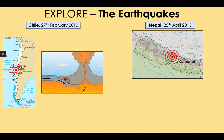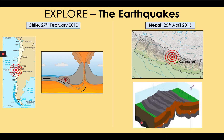By contrast, in Nepal there is a collision plate boundary. Two continental plates are crashing into each other, which forms the Himalayan mountains. The friction between these plates means that movement doesn't happen in a regular process — it happens suddenly in jolting movements, and these movements create very powerful earthquakes, with the focus often quite near the surface. The Nepal earthquake, while only 7.9 on the Richter scale — so 100 times weaker than the strongest earthquake of all time and 10 times weaker than the Chilean earthquake — occurred much closer to the surface, only 15km below, meaning that the shaking was almost equally strongly felt.